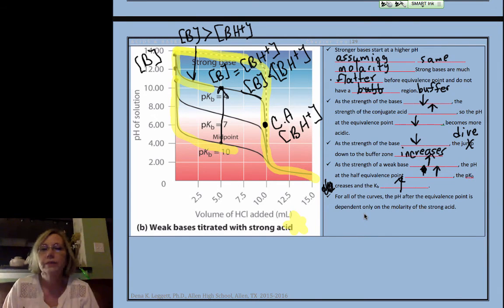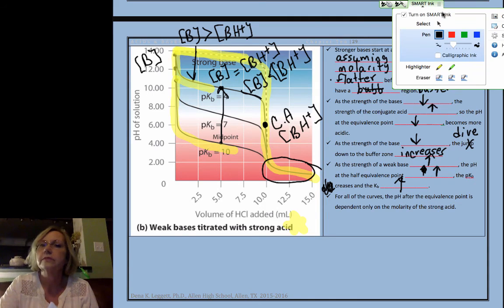So, for all curves, the pH after the equivalence point is dependent only on, that's this here, the molarity of the strong acid.